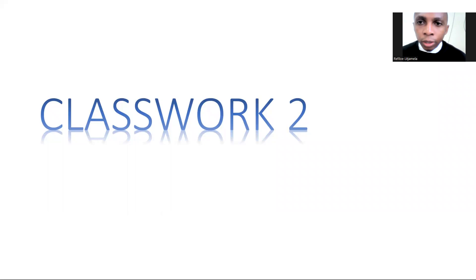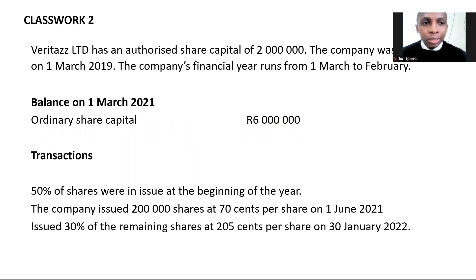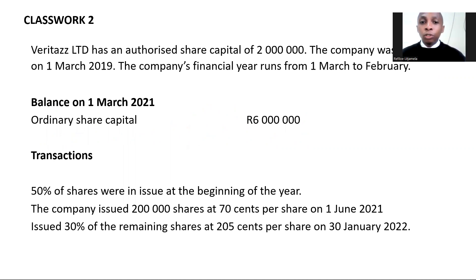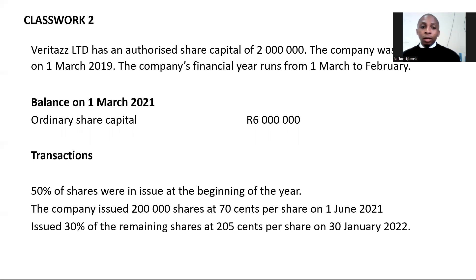Classwork two - let us look at trust with two. Spirit has an authorized share capital of two million rand - that is just the number of shares, so we have authorized share capital of two million. The company was founded on the 1st of March 2019, and the company's financial year runs from the 1st of March to 28th or 29th of February. I will first start by recording what I read from that short paragraph.